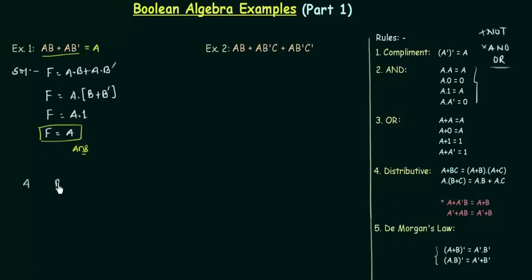We have two variables A and B. The output is F, and this is equal to AB + AB'. As there are two variables, we have four possible combinations: 0,0; 0,1; 1,0; 1,1. Now let's try to find out the value for F.